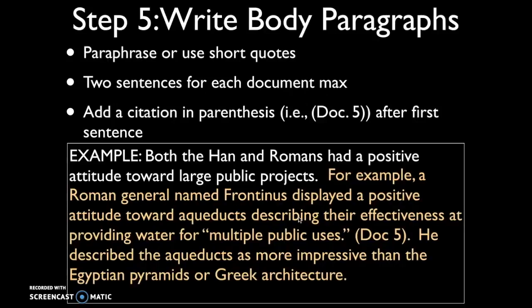So in one to two sentences, starting with 'for example' — which is always a good transition into evidence — you might write: 'For example, a Roman general named Frontinus displayed a positive attitude towards aqueducts, describing their effectiveness at providing water for multiple public uses (Doc 5). He described the aqueducts as more impressive than the Egyptian pyramids or Greek architecture.' That second sentence helps tie back and support the claim that Romans had a positive attitude toward large public projects.